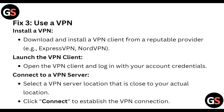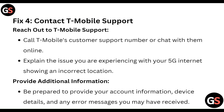Fix four: Contact T-Mobile support. Reach out by calling T-Mobile's customer support number or chatting with them online. Explain the issue you are experiencing with your 5G internet showing an incorrect location, and be prepared to provide your account information, device details, and any error messages you may have received.